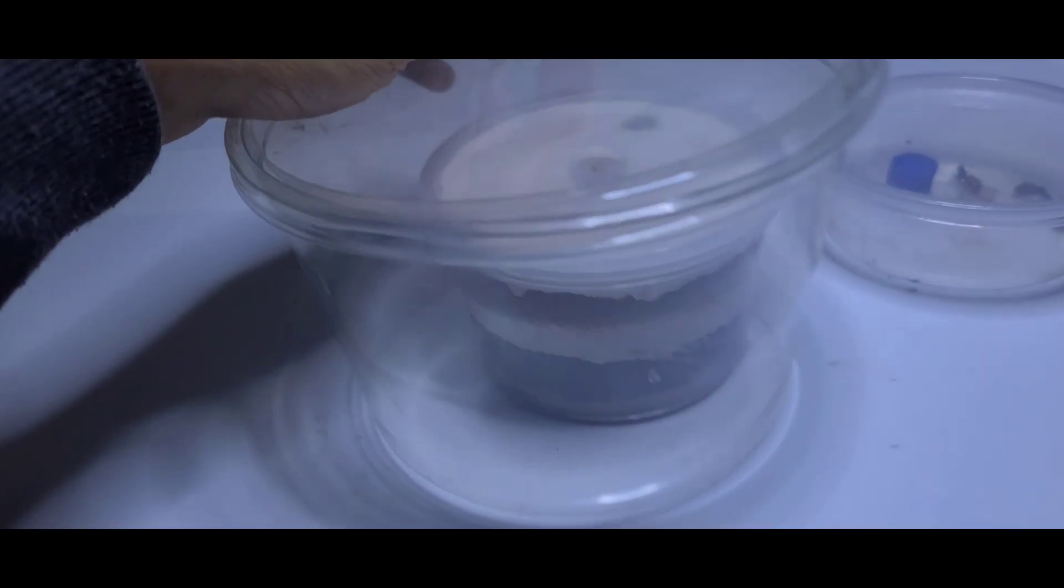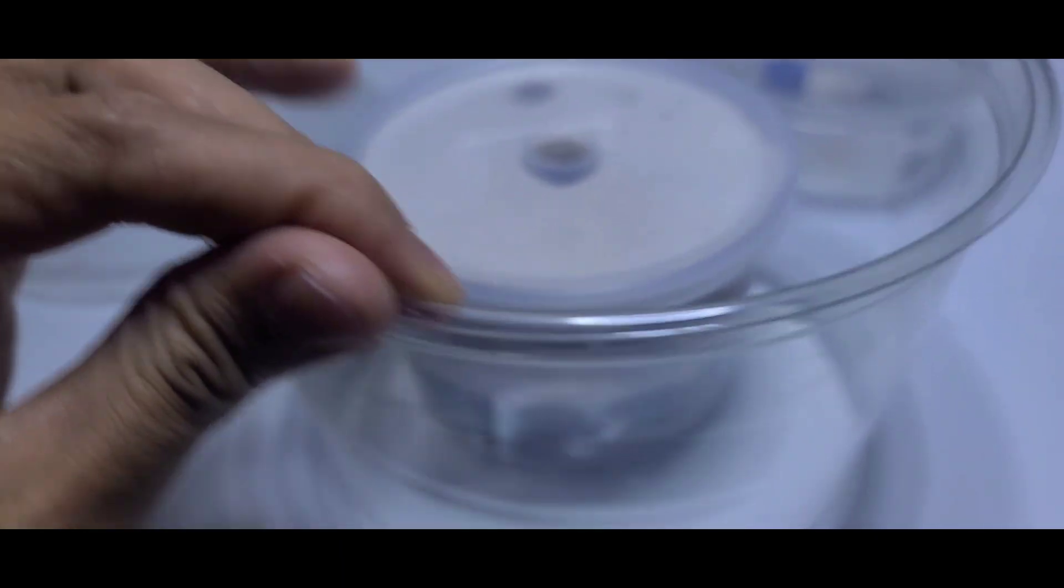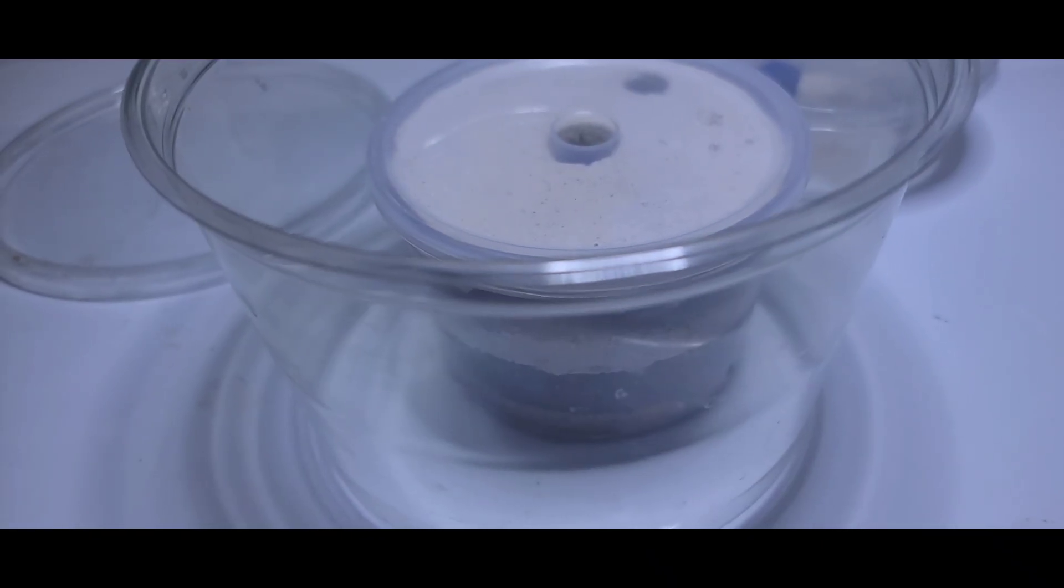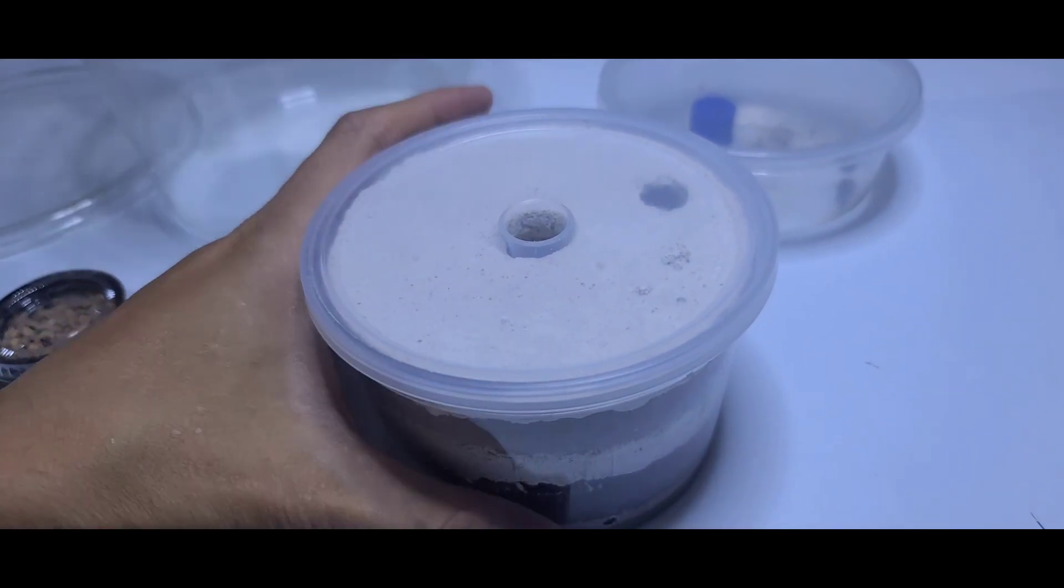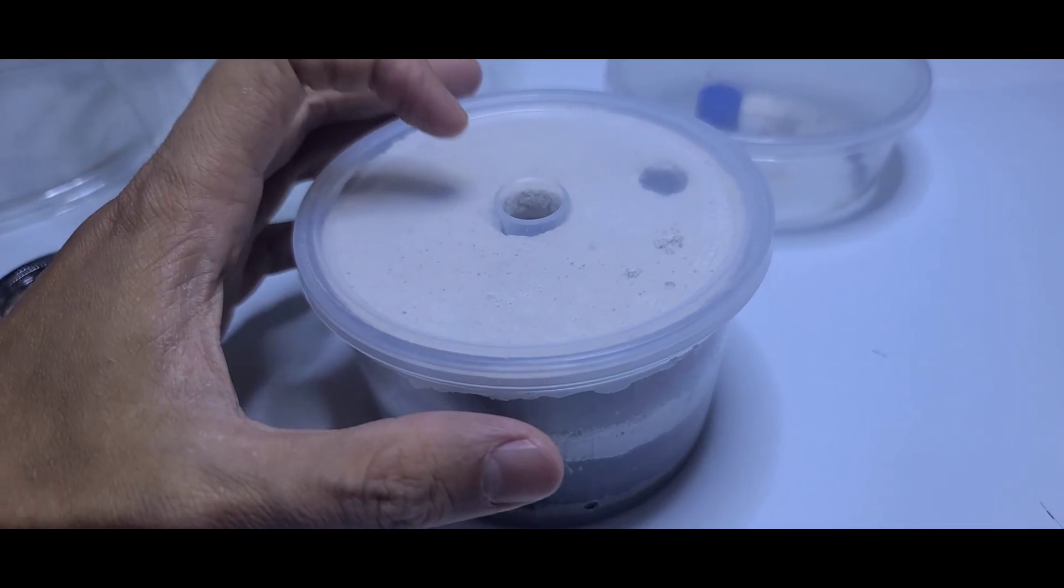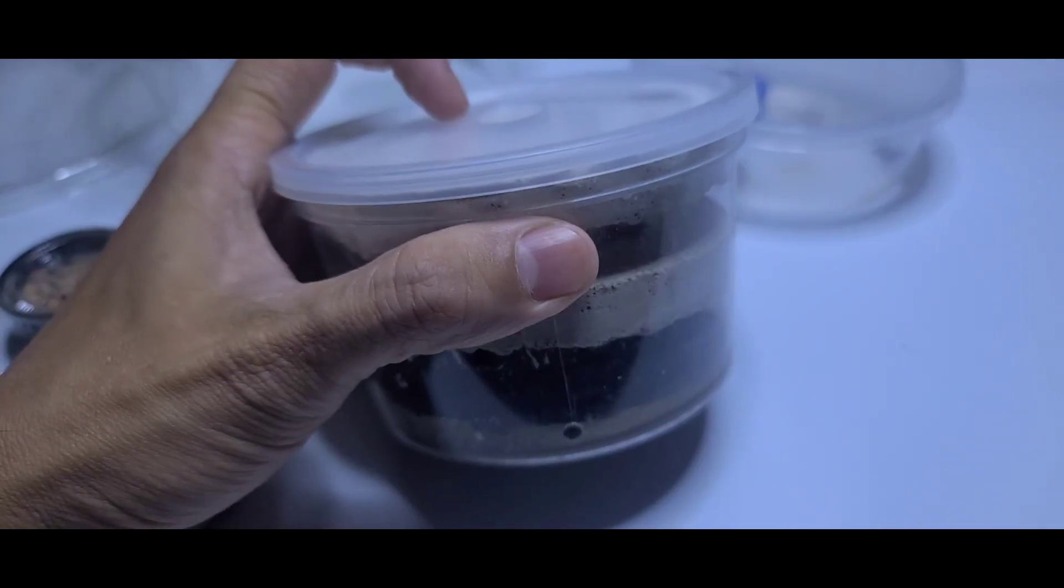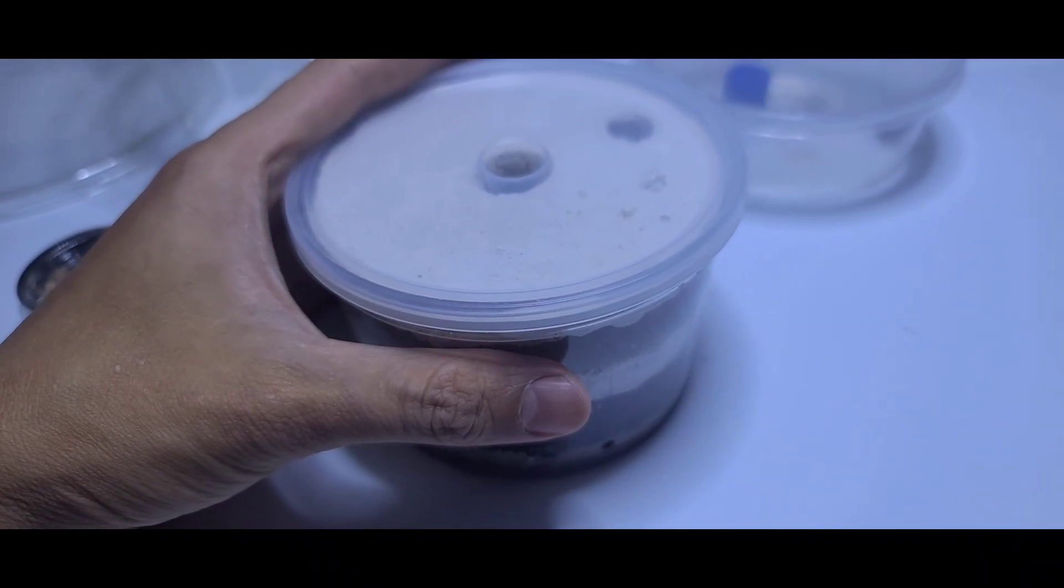If you got a formicarium from me, this is how you're going to use it. If you got just a nest, the nest should look like this, which means you're missing an outworld. Once you put the ants in here, they have two exits: one on top and one at the bottom.